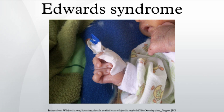Epidemiology: Edwards syndrome occurs in about 1 in 6,000 live births, but more conceptions are affected by the syndrome because the majority of those diagnosed with the condition prenatally will not survive the prenatal period. Although women in their twenties and early thirties may conceive babies with Edwards syndrome, the risk increases with a woman's age. The average maternal age for conceiving a child with this disorder is 32 and a half.